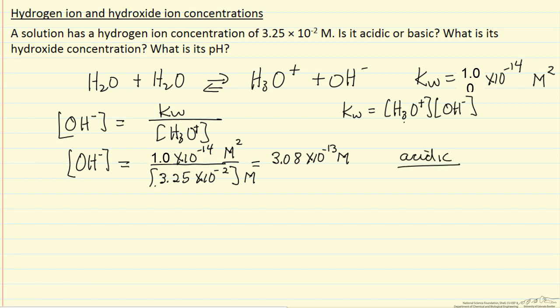And then we can calculate the pH. So the pH is log base 10, and then we're given the H3O plus concentration.